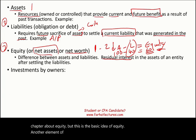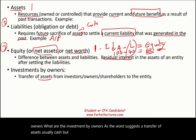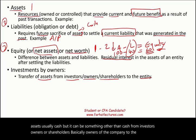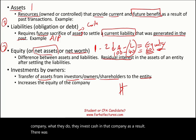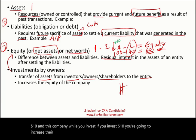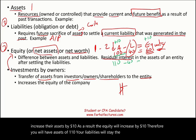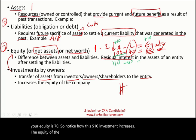Another element is investment by owners — a transfer of assets, usually cash, from investors, owners, or shareholders to the entity. When an investor invests cash in the company, it increases equity. For example, if you invest $10, you increase assets by $10, and as a result equity increases by $10 — so assets go from $100 to $110, liabilities stay the same at $40, and equity becomes $70.